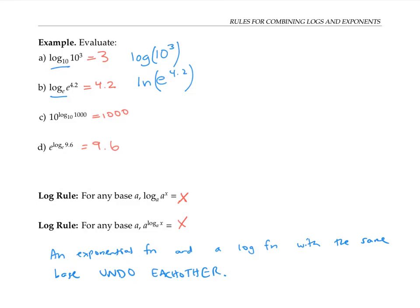Let's see why these rules hold. For the first log rule, log base a of a to the x is asking the question: what power do we raise a to in order to get a to the x? In other words, a to what power is a to the x? Well, the answer is clearly x. And that's why log base a of a to the x equals x.